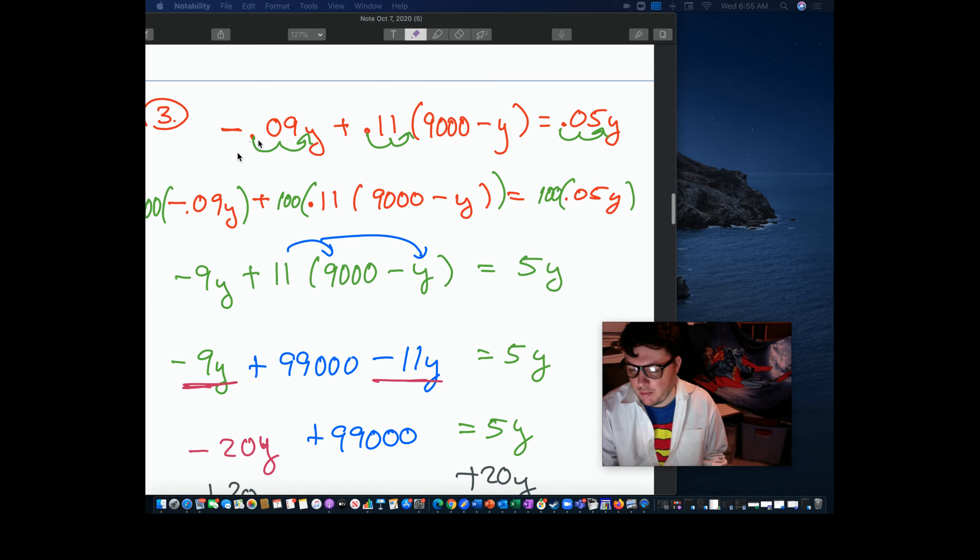Next one. Well, here we have decimals. So how do we get rid of decimals? You multiply through by 100, because we'll notice each one of these, I can get rid of the decimal by moving the decimal place over 2. So that means you have two zeros. Multiply through by 100 to move the two zeros.